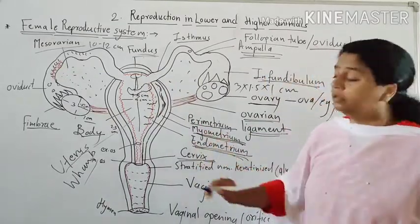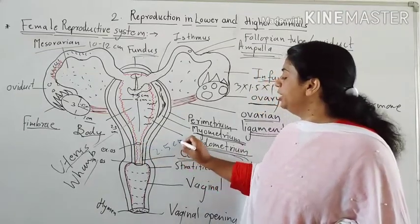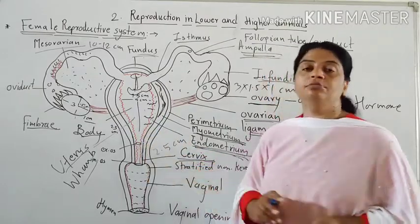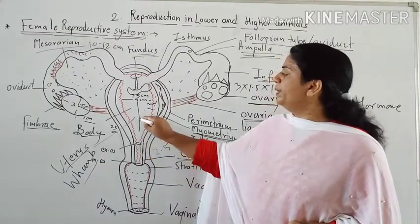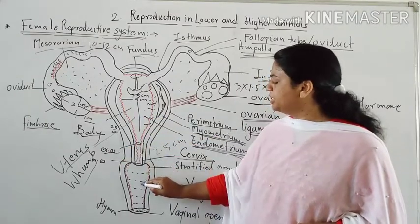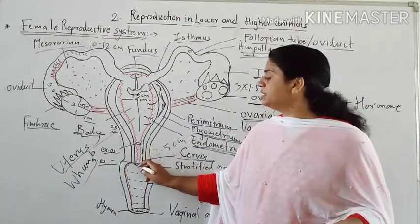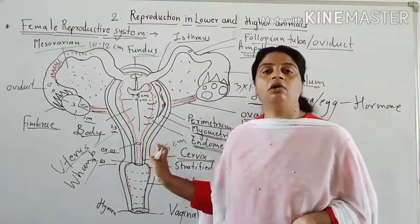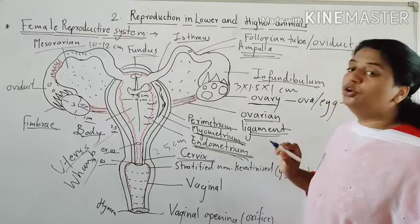The cervix is short and neck-like, only 2.5 cm in length, highly muscular and internally stratified. It has two openings: one that opens into the uterus called the internal os, and one that opens outward called the external os. Cervical cancer is associated with the cervix, and uterine cancer is associated with the endometrium.